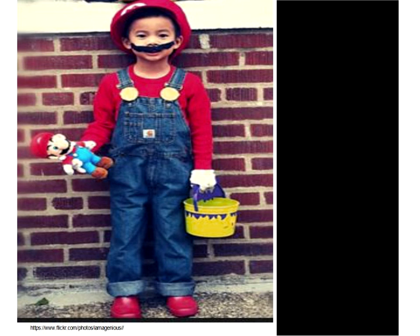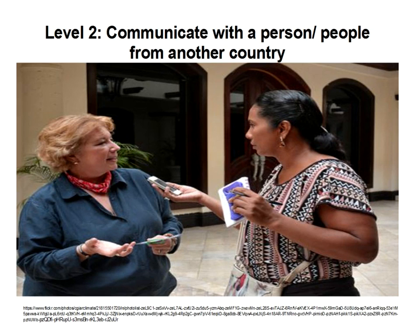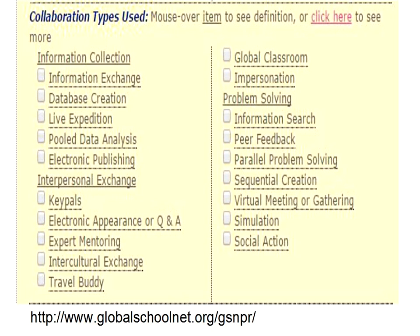People is really what makes it all about. I'm now going to begin the second section: communicating with a person or people from another country. This basically raises the level of what we're going to do. This happens to be from the Global School Net, showing different types of collaboration they offer. The first category is information collection — we find out some facts about the people. We may create something together or each do research and pool it. But that still deals mostly with facts and numbers.